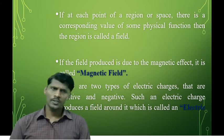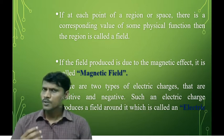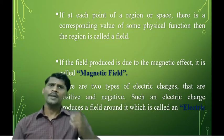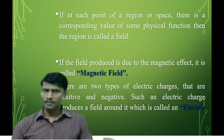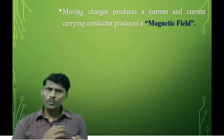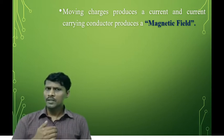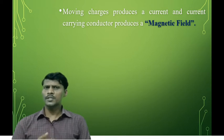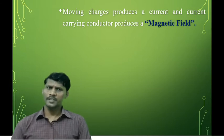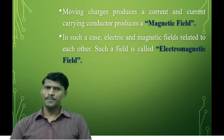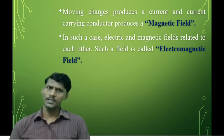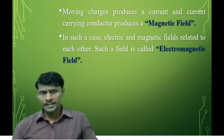There are two types of electric charges: positive charge and negative charge. Such an electric charge produces a field around it, which is called an electric field. Moving charges produce a current, and current-carrying conductors produce a magnetic field. In such a case, electric fields and magnetic fields are related to each other, and such a field is called an electromagnetic field.